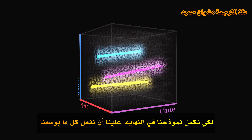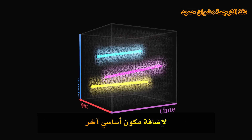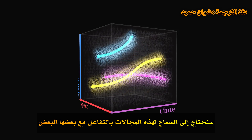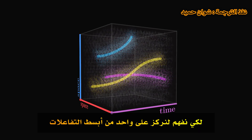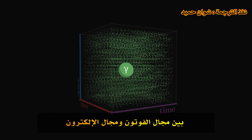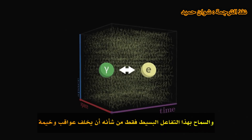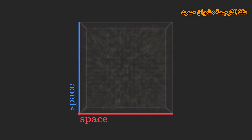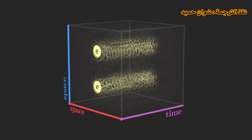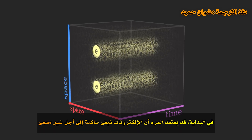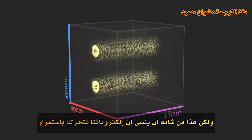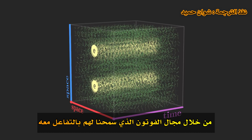To finally complete our model, all we have to do is add one more fundamental ingredient — we need to allow these fields to interact with each other. To understand, let's focus on one of the simplest interactions: between the photon field and the electron field. We will allow an electron to emit or absorb a virtual photon, and vice versa. Allowing only this simple interaction will have drastic consequences. We start with two electrons motionless. Over time, the two electrons progress towards the future. But that would be forgetting that our electrons are constantly moving through the photon field, with which we allowed them to interact.